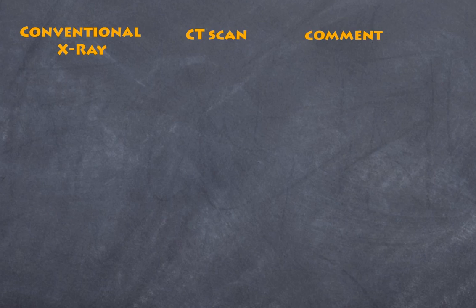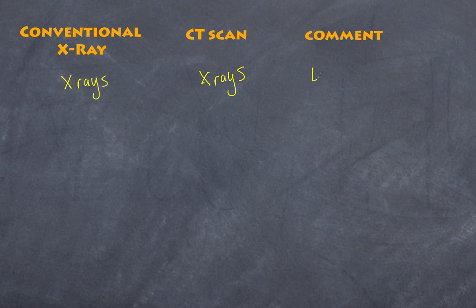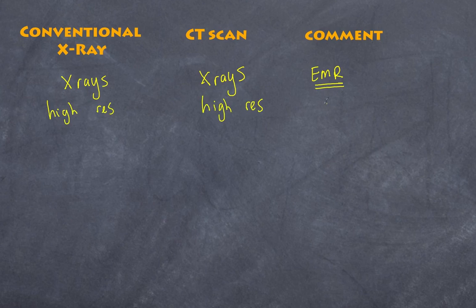Let's summarise what we know about conventional X-rays and CAT scans. First, the similarities: they both use X-rays, a form of electromagnetic radiation, and they both produce high-resolution images, which allows them to give good structural information.